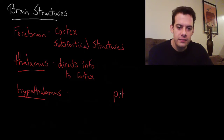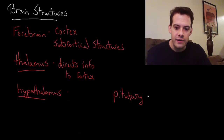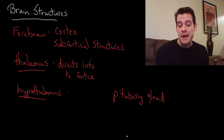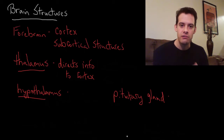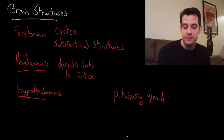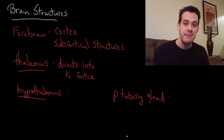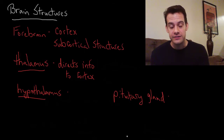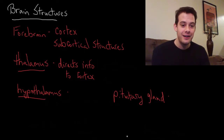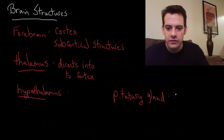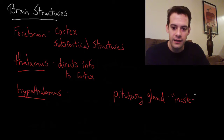Underneath the hypothalamus we have a gland called the pituitary gland, sometimes called the master gland. A gland is a structure that releases hormones, and the pituitary gland releases hormones that tell other glands to release their hormones. However, the hypothalamus is really the master because it tells the pituitary gland when to release its hormones — so the pituitary is more like a middle manager. You might still see it called the master gland because its hormones tell the other glands what to do.